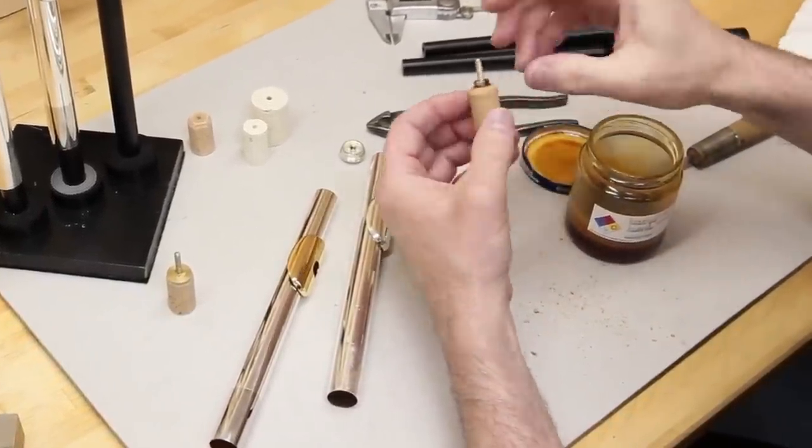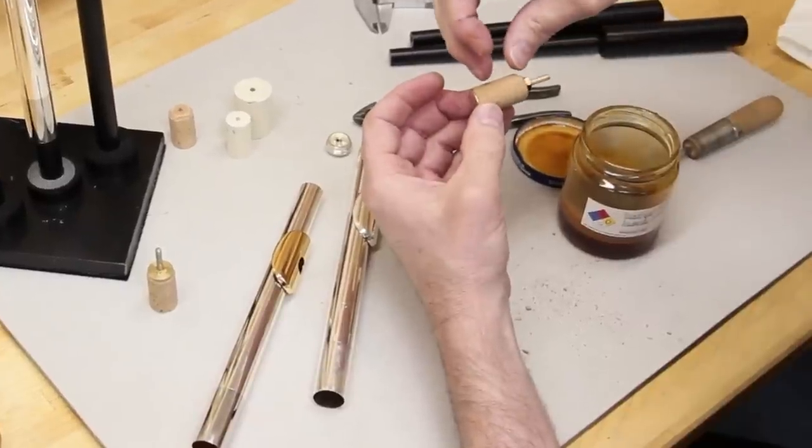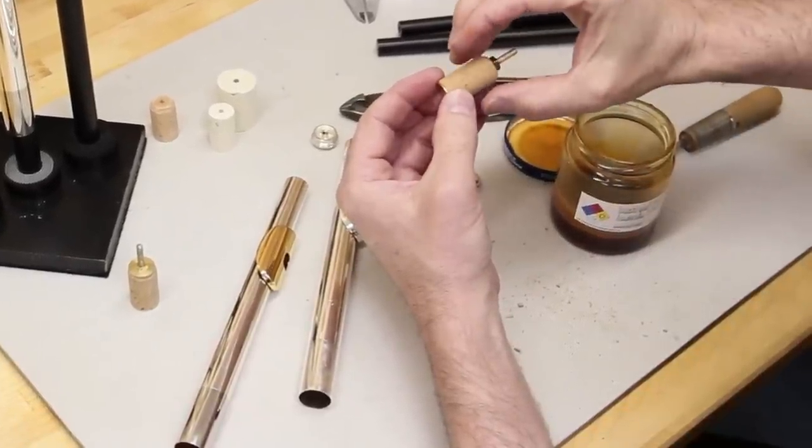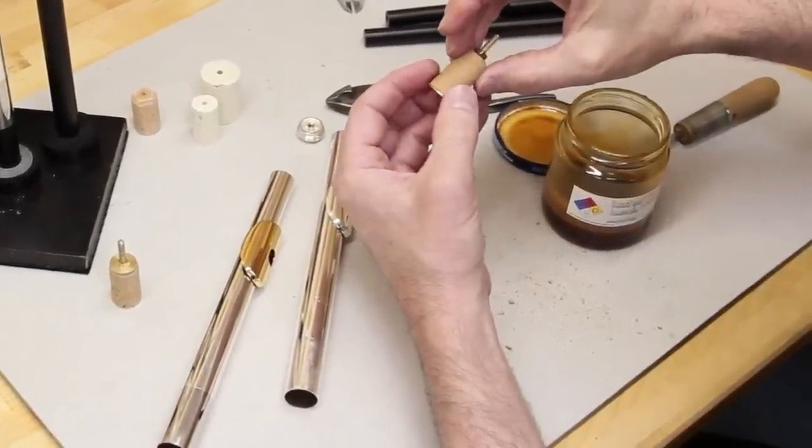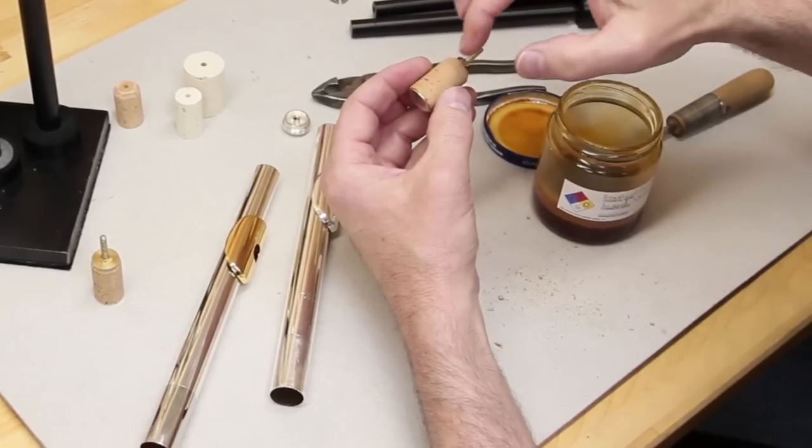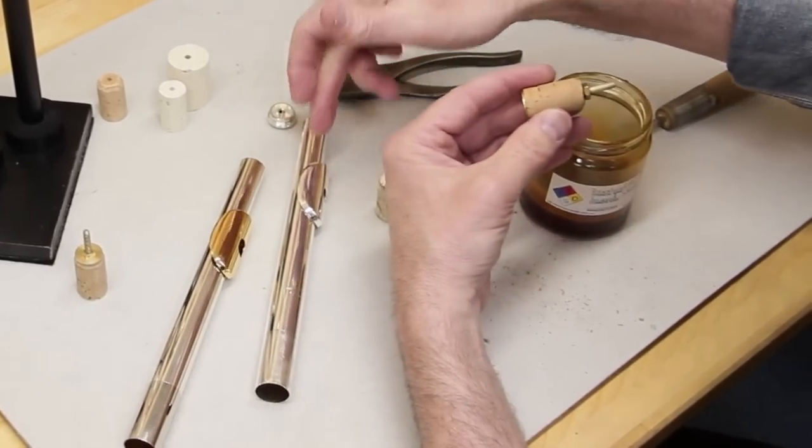When you put that pressure on the plate, you'll see that the cork sometimes expands a little bit in diameter. And that's okay because the next step is we're going to shape this to fit the head joint.